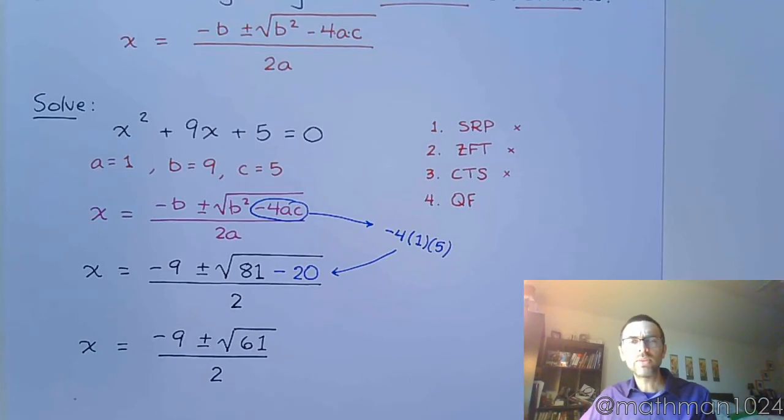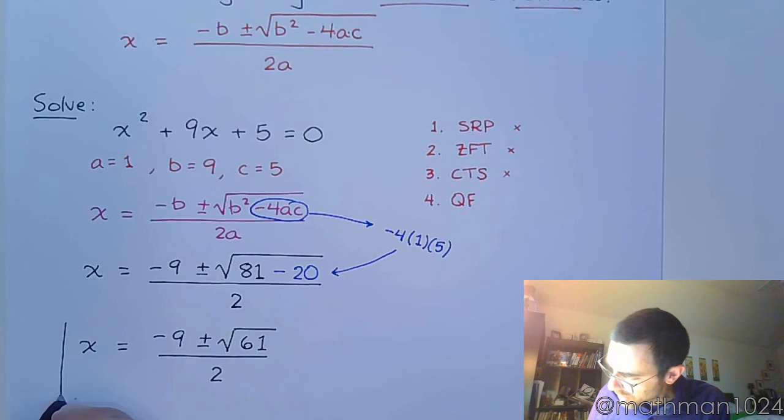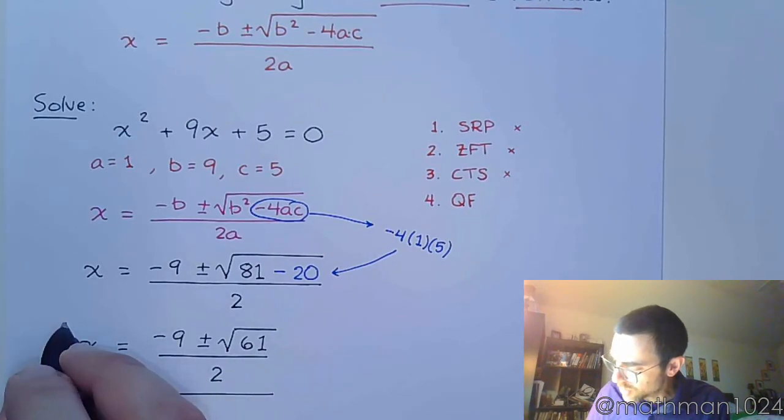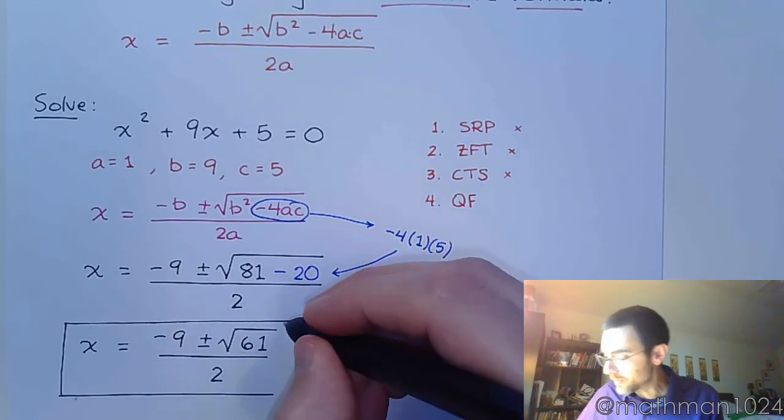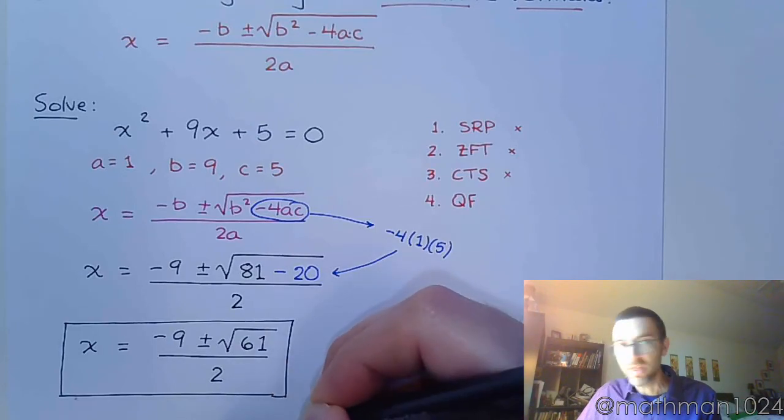Now, you would want to take that square root of 61 and see if it reduces. But 61 is prime, so it doesn't reduce at all. So this is it. Now, you could have gotten the same answer by completing the square, but I'm going to tell you right now, it's not going to be that much fun.